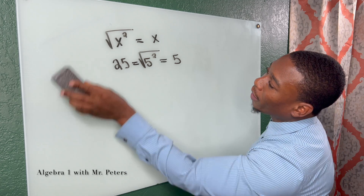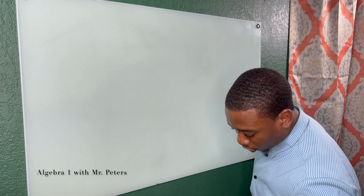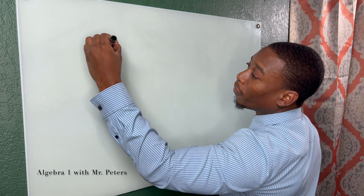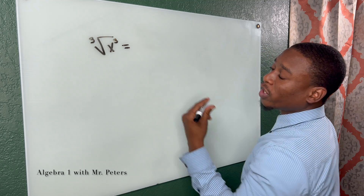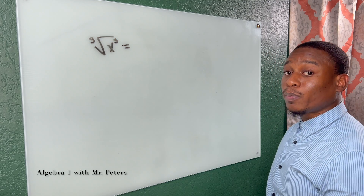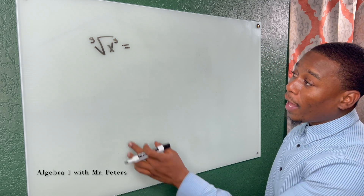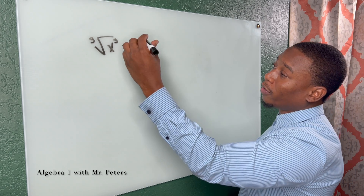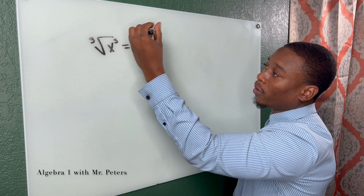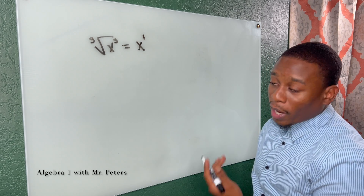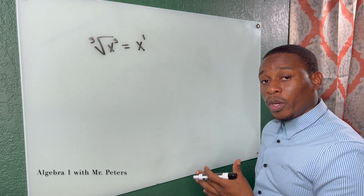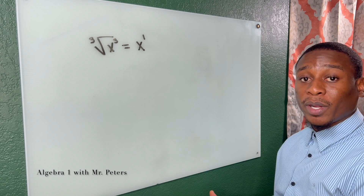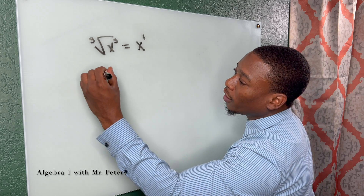Now let's look at cube roots with variables. For the cube root of x to the third power, we're looking for how many triplets we have. x cubed is one triplet — we have three of those x's — so the cube root of x³ equals x.